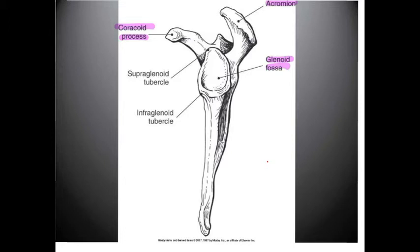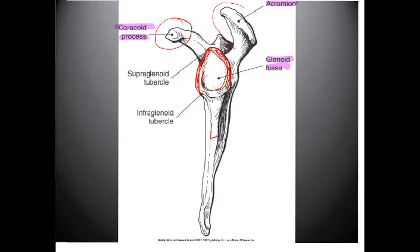A Y-view demonstrates what the glenoid fossa actually looks like — a depression created by the glenoid process. Looking from the lateral border toward the medial portion, the coracoid process juts anteriorly, the acromion resides posteriorly, and the scapular notch and scapular spine are also identifiable.